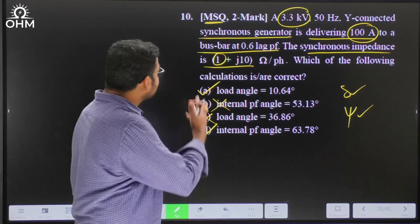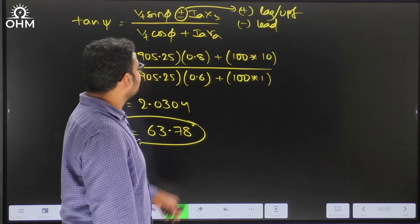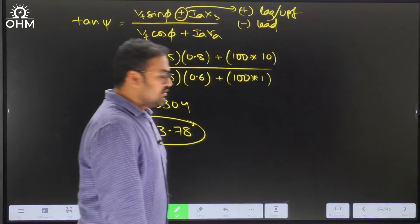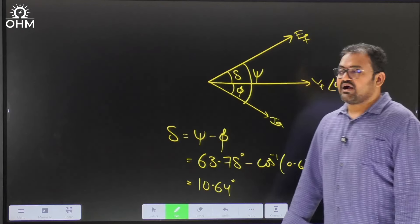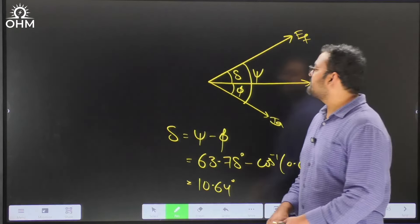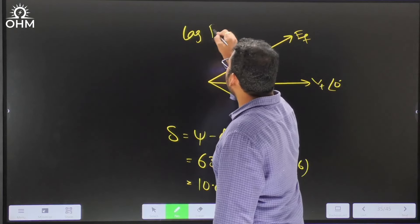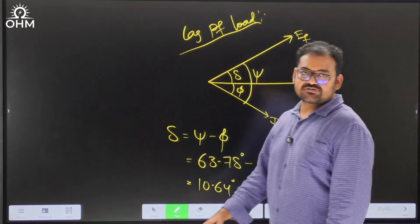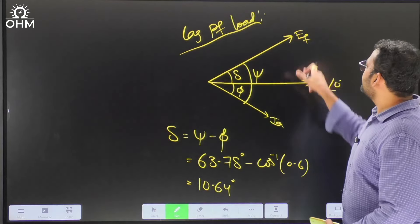This is a two-mark question solved using just the tan-ψ formula to find the internal power factor angle, then the phasor diagram to find the load angle. In a generator, EF always leads Vt. For a lagging power factor load, δ = ψ − φ. The correct answers are options A and D.